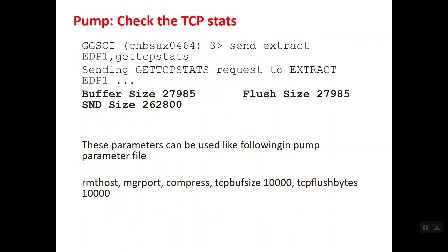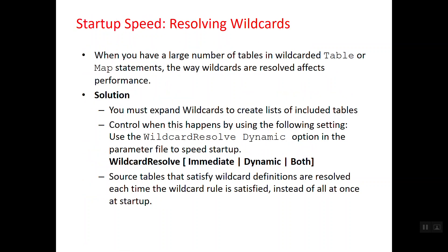For the pump, which sends data to the target through the network, TCP stats parameters include buffer size and flush bytes. You can set these parameters in the pump parameter file. You can view them using the command: send extract [process name], get TCP stats — this shows buffer size and flush size. To improve performance, increase these values provided your network bandwidth supports it. These are the main parameters for tuning the pump.